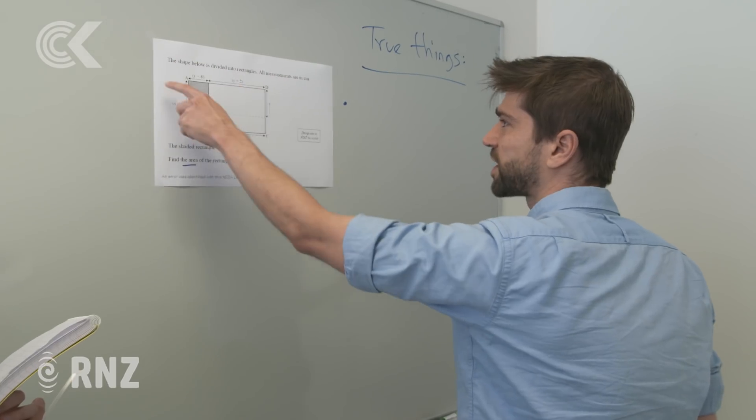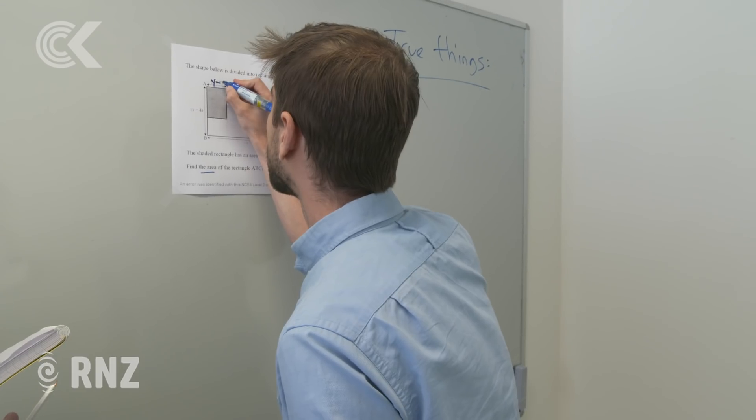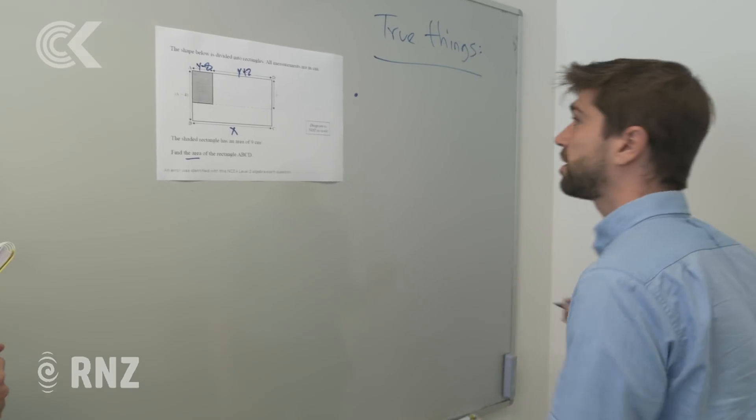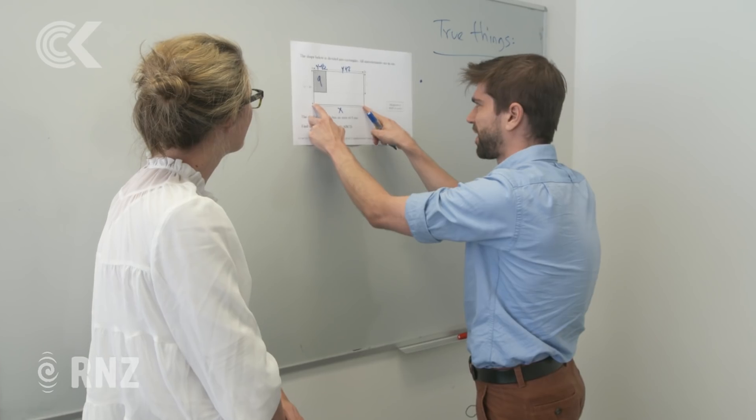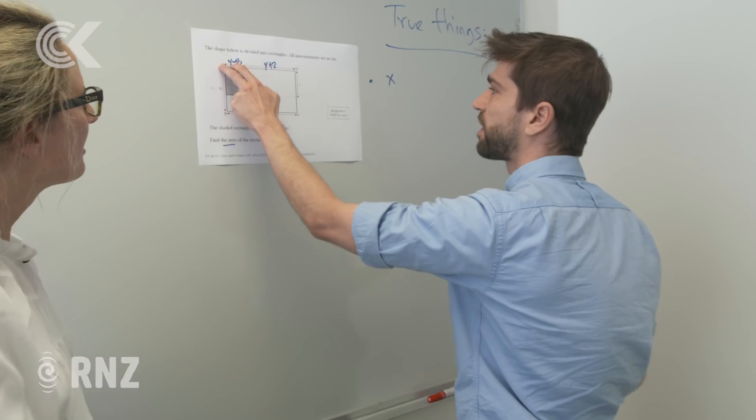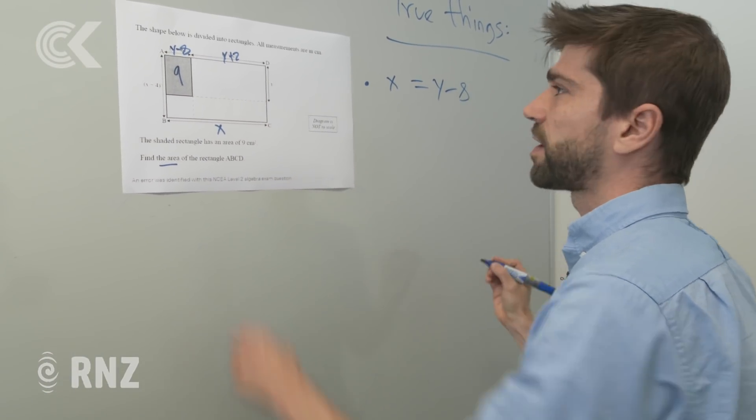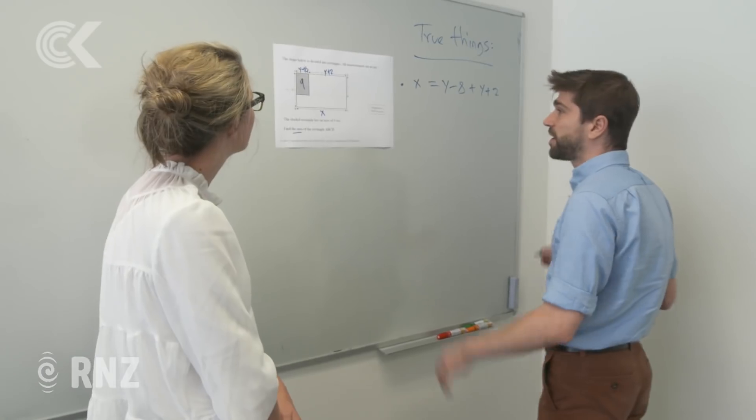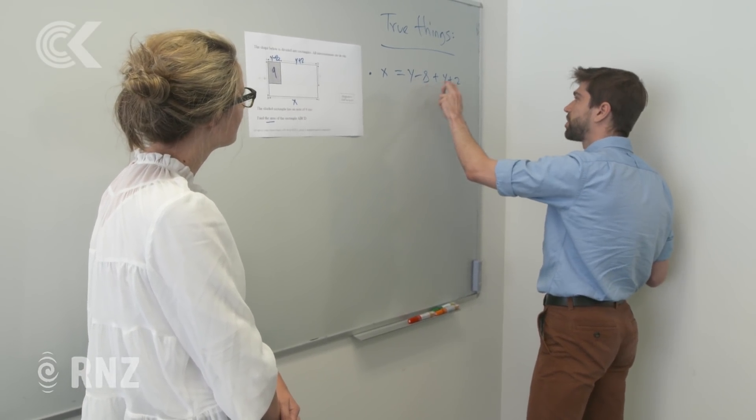Thing one, we've got a rectangle, we know opposite sides of the rectangle are equal. This is a bit washed out, this is a y minus 8 and a y plus 2, there's an x down here. We start by writing down true things. We know opposite sides of a rectangle are equal. You can see it, this is this. Well, this thing down here is an x. And this thing up here, this part is a y minus 8 and this part here is a y plus 2. And so you get, from this geometric picture, an algebraic equation: x is y minus 8 plus y minus 2.